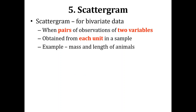Next is the scattergram, one of the basic types of graphs used in presenting data. The scattergram is particularly useful for representing bivariate data. Bivariate means two variables — bivariate data is the type of data when pairs of observations of two variables are obtained from each unit in a sample. For example, mass and length of animals: we measure the length of an animal and from the same animal we take another measurement for mass. This is bivariate data — two observations for two variables from the same sampling unit.